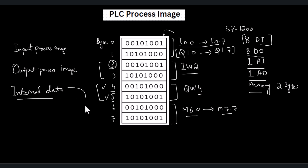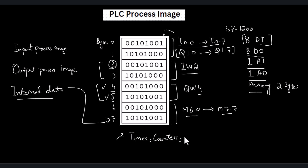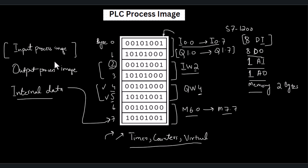The internal data refers to the data stored in memory bits. It can also store the data of the PLC timers, counters, or any virtual data that we may use in our PLC program. All this data is stored in the PLC process image as internal data. The PLC process image can be classified as input process image, output process image, and internal data process image.